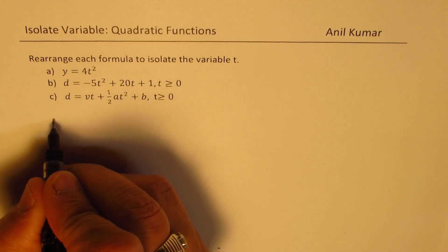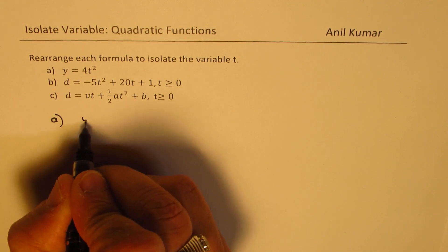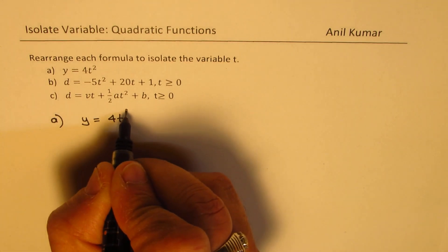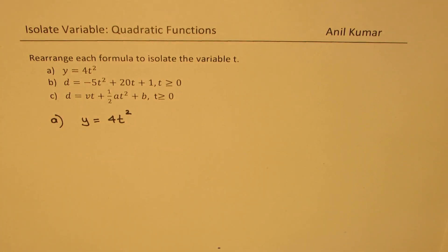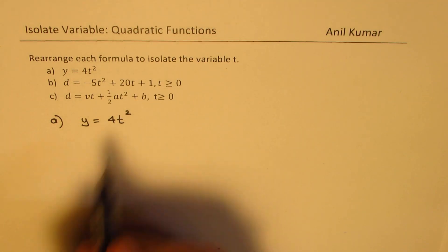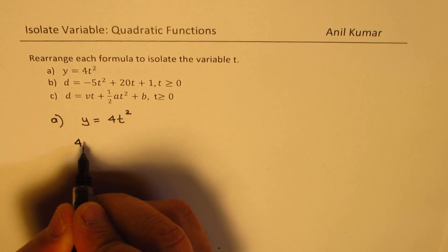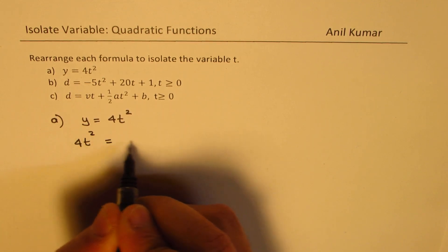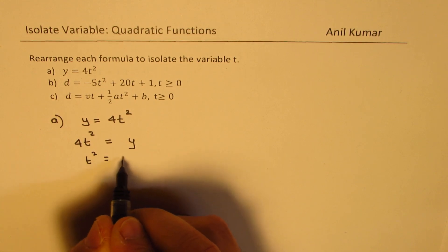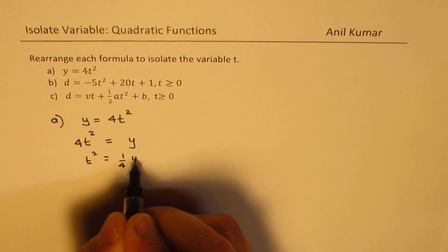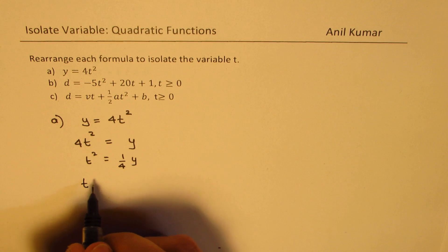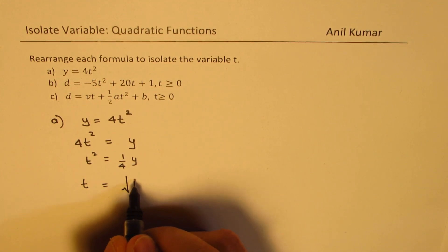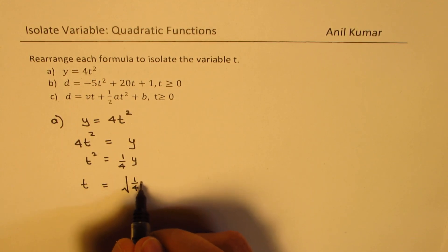Let's begin with the very first one, which is y equals to 4t squared. I'll appreciate if you could also solve along with me and check your solution. You can always pause the video in between. So y is 4t squared. We need to isolate t. That should not be difficult. We can write this as 4t squared equals to y, or t squared equals to one-fourth of y. And now we'll do square root — so within the square root, we have both these terms.